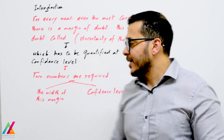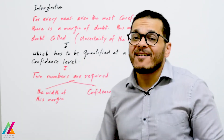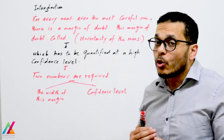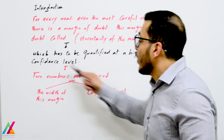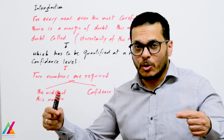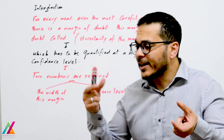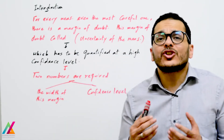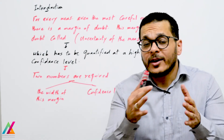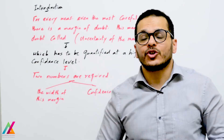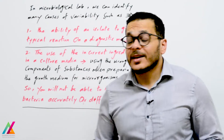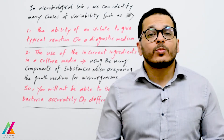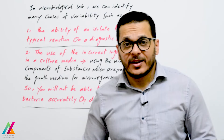This margin of doubt shall be quantified at a high confidence level to give a reliable result. Two numbers are required to quantify this margin of doubt: the width of the margin — how wide the range is — and the confidence level — how confident you are that the true value lies within that range after addition of the measurement uncertainty.